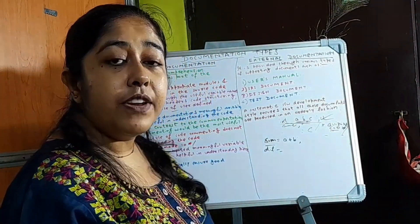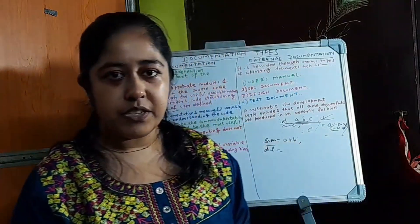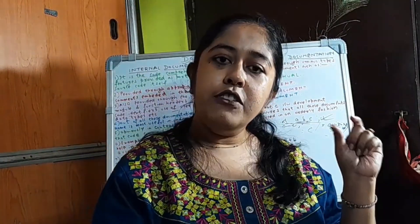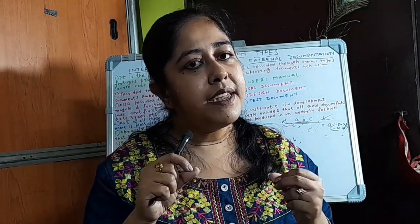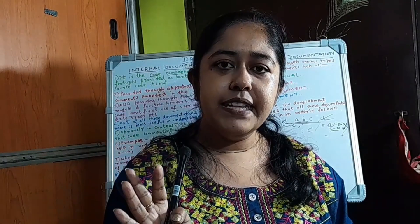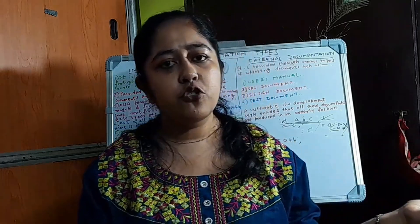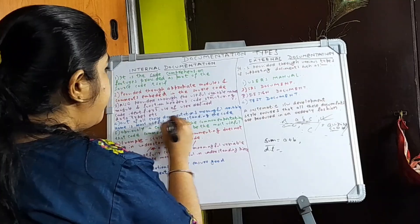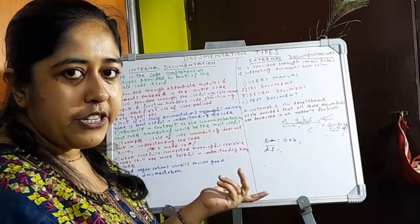These kinds of meaningful variable names — for example, writing 'sum equals a plus b' instead of just 'c equals a plus b' — are very important in internal documentation. Whenever you are going for internal documentation, you have to ensure that meaningful variable names are given. Variable names should be such that they can show what function they are going to do. This is very important: meaningful variable names are more important than just commenting in documentation.